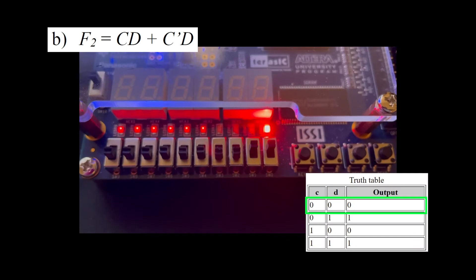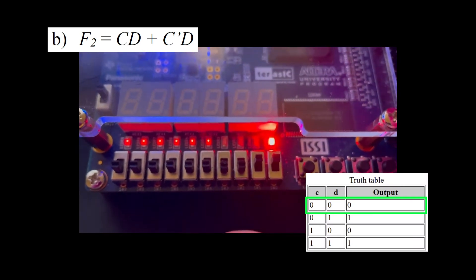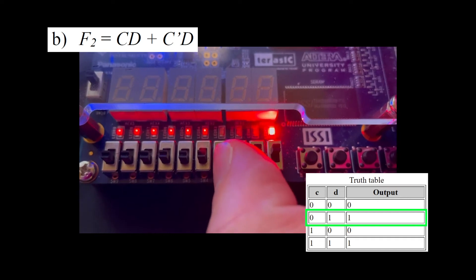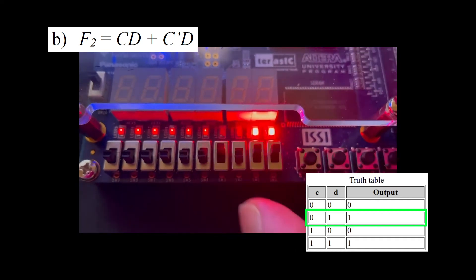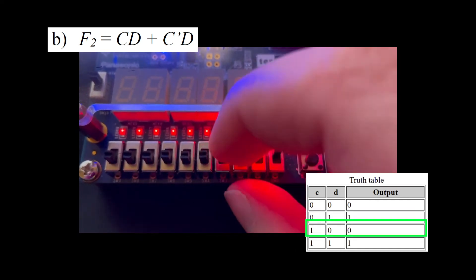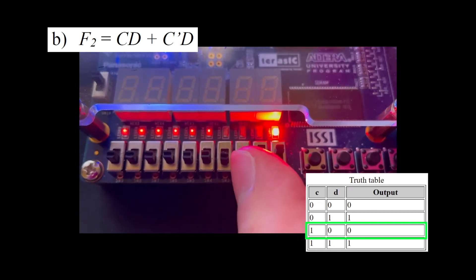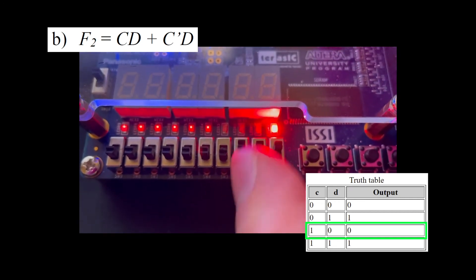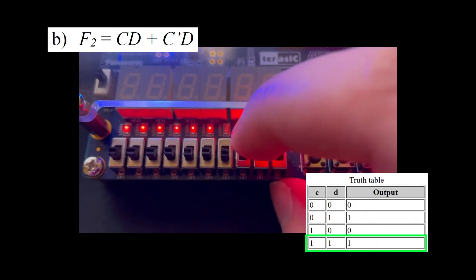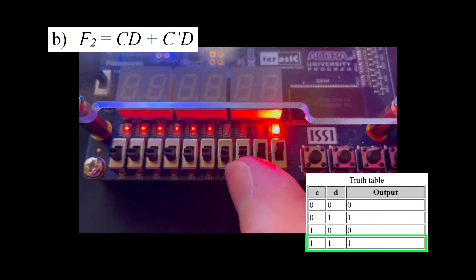When C is 0 and D is 0, F2 is 0. When C is 0 and D is 1, F2 is 1. When C is 1 and D is 0, F2 is 0. When C is 1 and D is 1, F2 is 1.